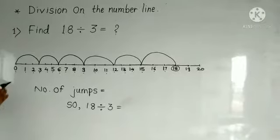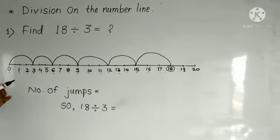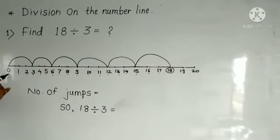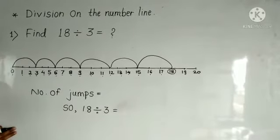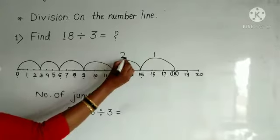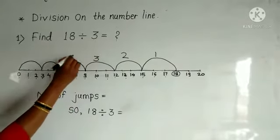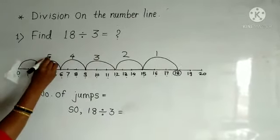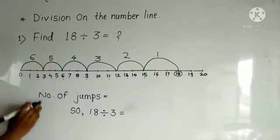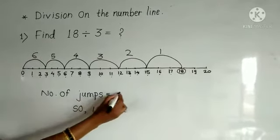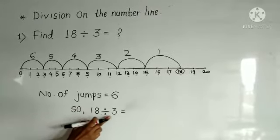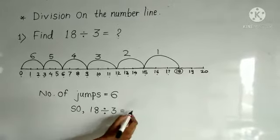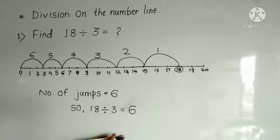Continue jumping backwards by 3 until you come to 0. Now count the number of jumps: 1, 2, 3, 4, 5, 6. Number of jumps is 6. So our answer is 18 divided by 3 equals 6.